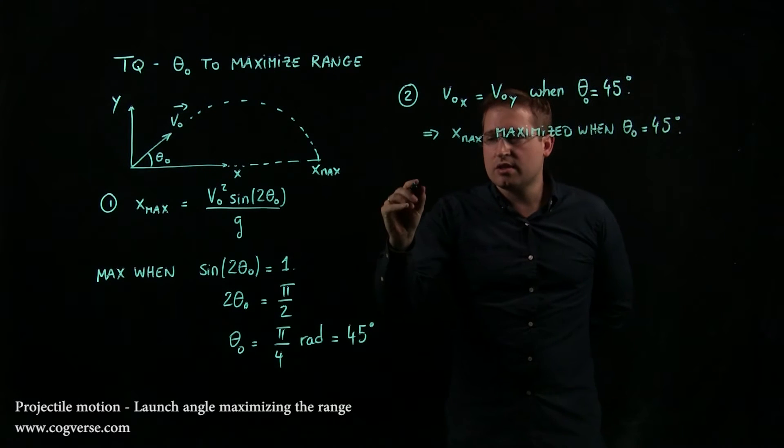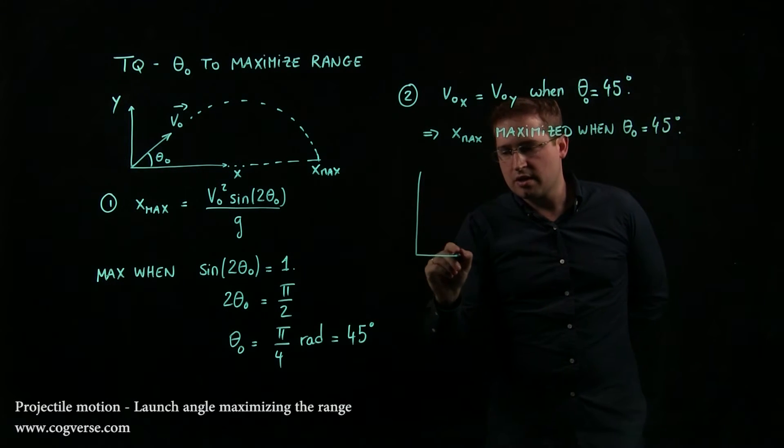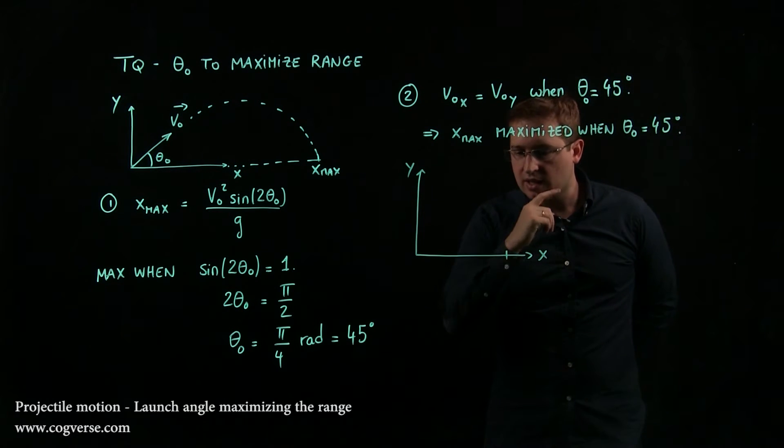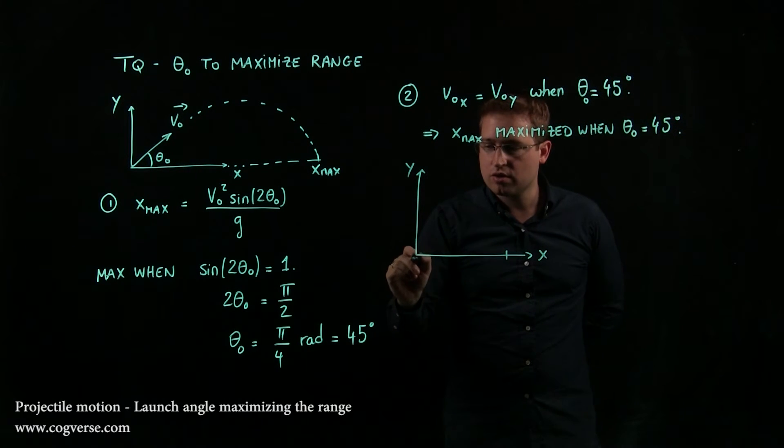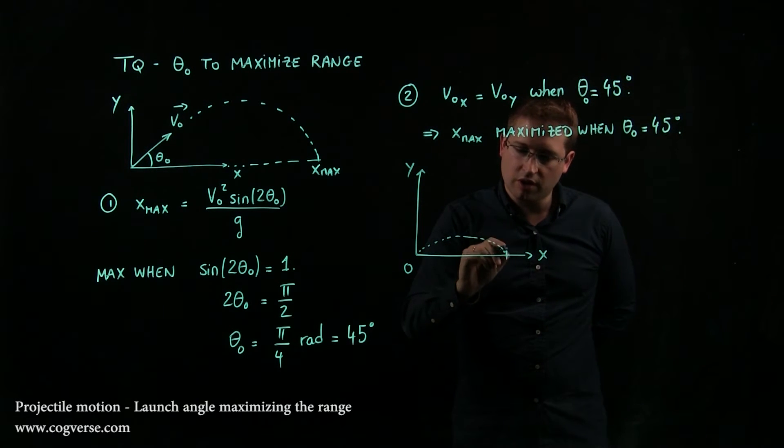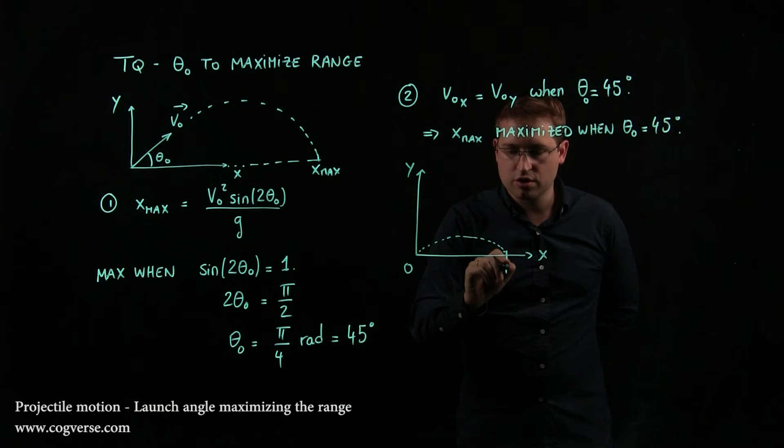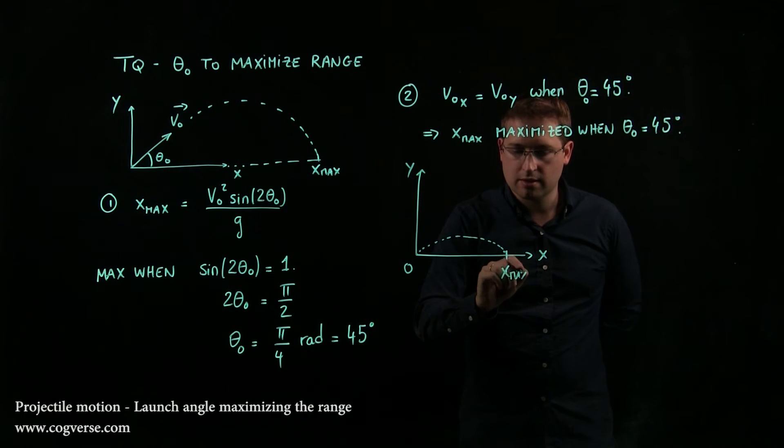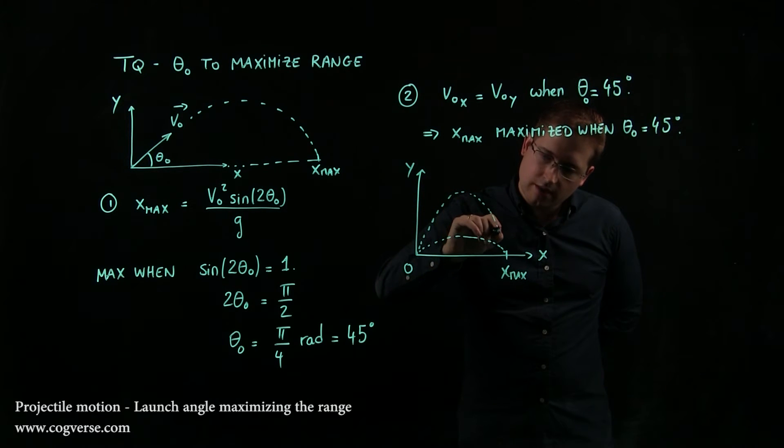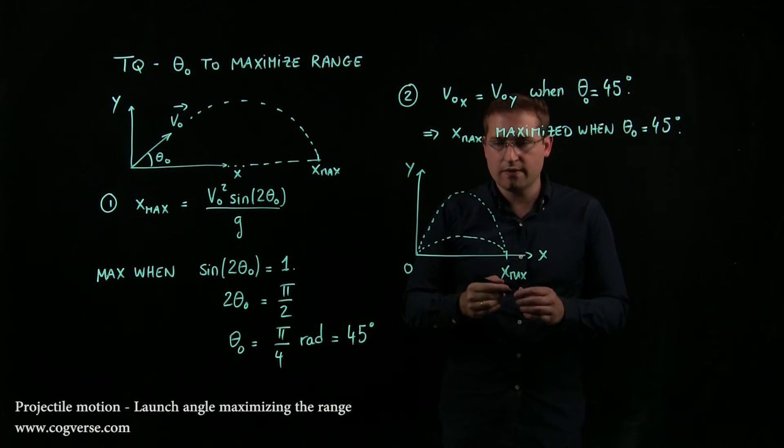If you don't like that reasoning, you could also reason it this way. You can say that here's x and here's y. We said that for a given range, there's two ways of getting there. There's shooting low and achieving this range, call it xₘₐₓ, and then there's shooting high and achieving the same range.